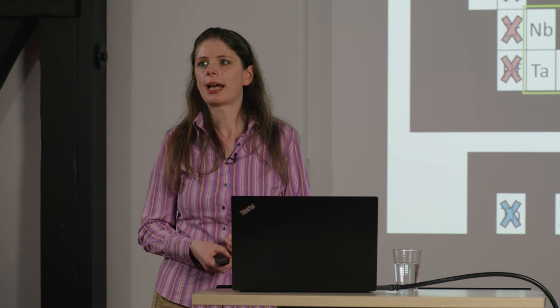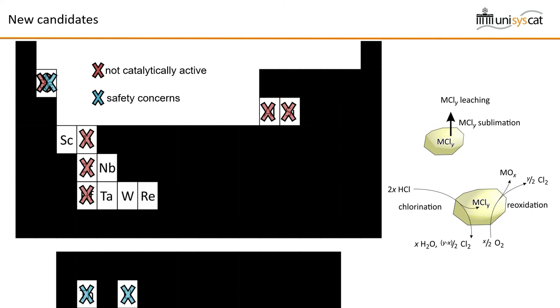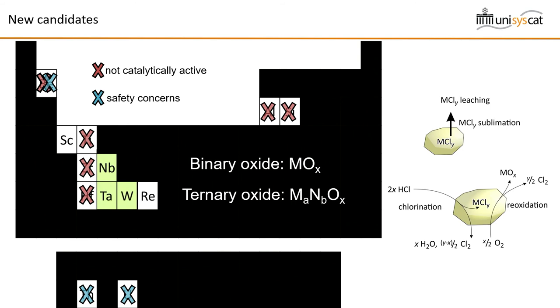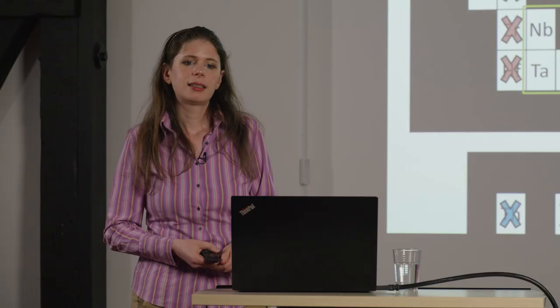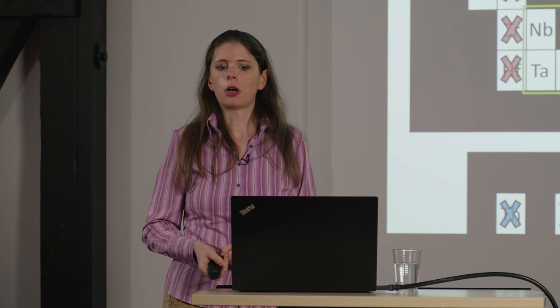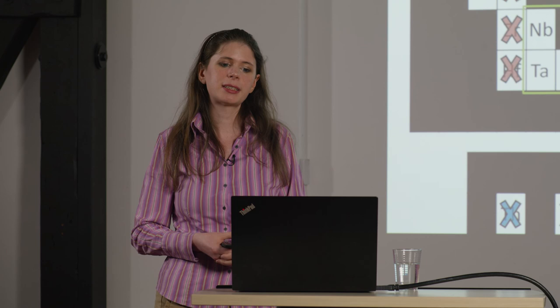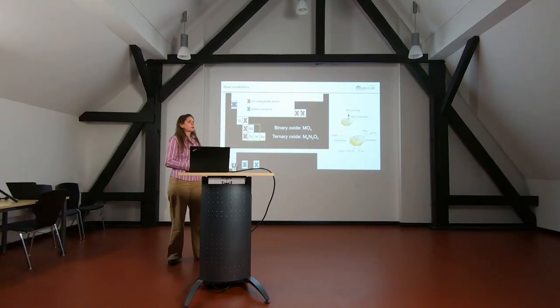However, this result is actually very important because it confirms what has been suspected for a long time: amongst the binary oxides — MOX, where you have one metal cation and oxygen in the lattice — there is most likely no suitable catalyst material. This is actually a very, very important insight which also tells us what we have to do in the future, and that is we need to study more complex compositions, that is ternary oxides. Ternary oxides contain two different metal cations and oxygen, and this is basically also the direction that I want to take the research into. I'm going to expand this model for ternary oxides and perhaps even more complex compositions and see if we can find suitable candidates in this much larger chemical space.